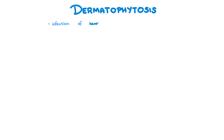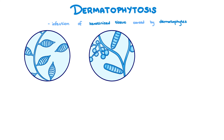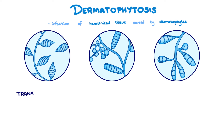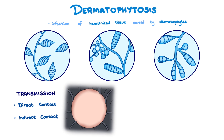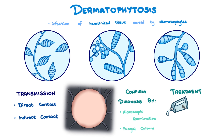In summary, dermatophytosis is an infection of keratinized tissue caused by dermatophytes — fungi belonging to the genera Microsporum, Trichophyton, and Epidermophyton. They are transmitted via direct or indirect contact. They are keratinophiles, causing itchy, ring-shaped lesions of hair loss. Some species glow green when examined under Wood's lamp, but diagnosis is confirmed through microscopic examination or fungal culture. Local lesions can be treated with topical antifungals, but more severe and widespread lesions may require systemic antifungal therapy.